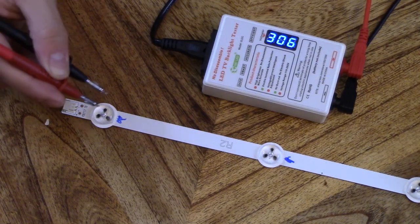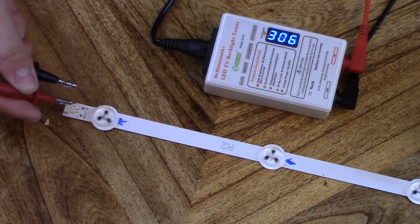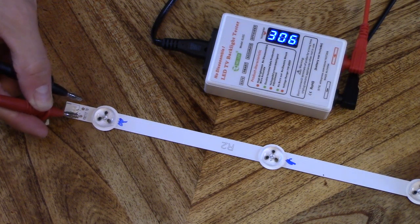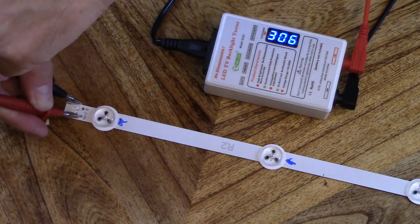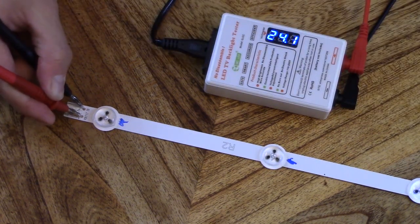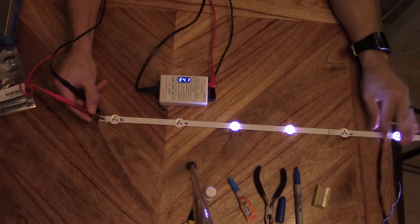We're going to put our meter probes right here on the test point. The plus is where the red positive probe goes and the minus symbol on that copper pad is where the black probe is going to go. The tester is going to put a load on the LED strips.